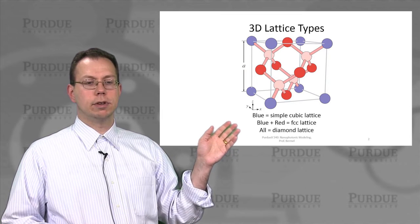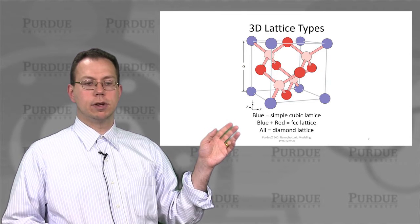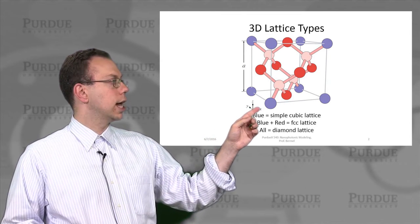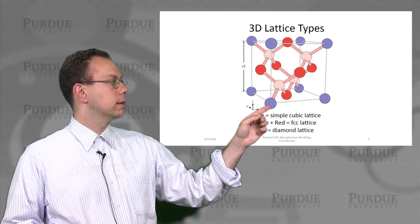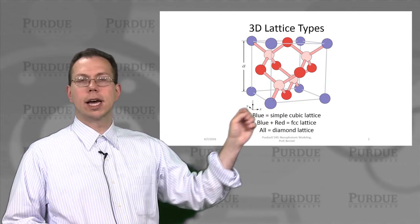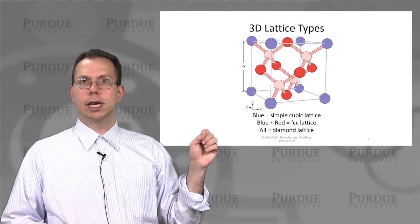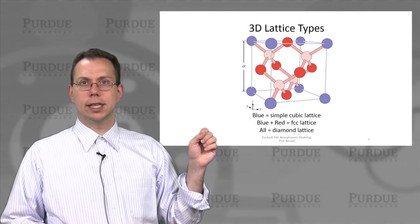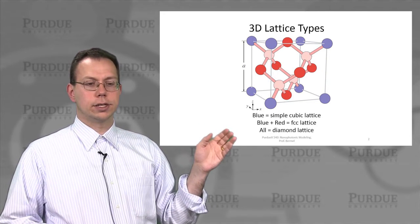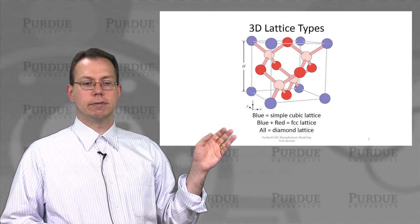But then if you start adding some of these extra subunits — like the red subunits, which are kind of the dark red here — then that creates what's called a face-centered cubic or FCC lattice. And that's also a major common type of lattice.